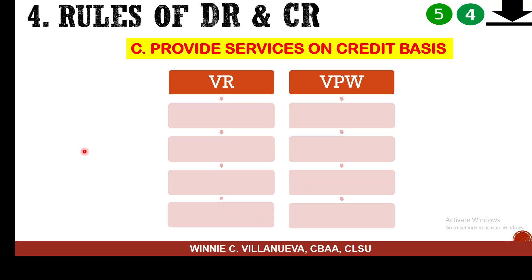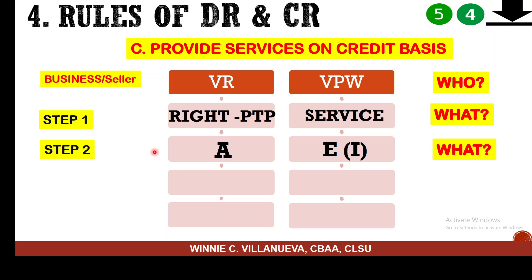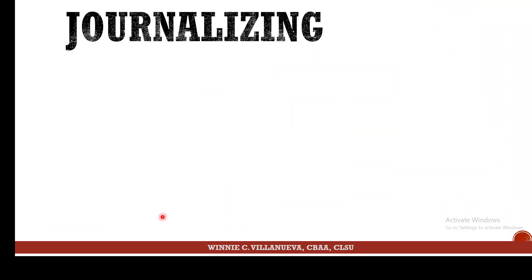The third sample: providing services on credit. You are still the seller, but this time you receive a promise to pay instead of cash. You now have the right to collect — that's a receivable asset. Your asset and equity both increase, so debit and credit. The correct name for the promise received is Accounts Receivable, and since you sold a service, the credit is Service Income.